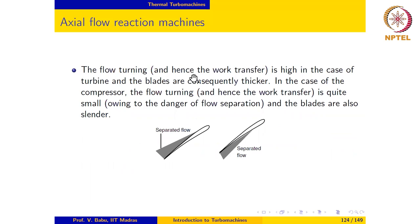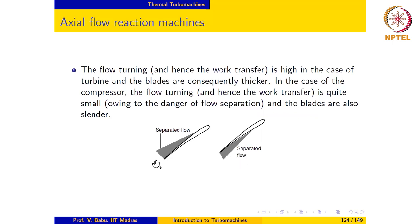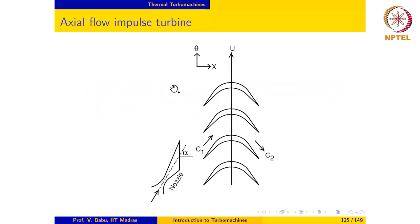Flow turning and work transfer are high in the turbine due to the favorable pressure gradient, so blades are thicker and more curved. In the compressor, flow turning and work transfer are limited by the danger of flow separation, and the blades are consequently slender. When the boundary layer separates from the blade surface, the flow becomes unsteady and compressor performance becomes highly unstable; the resulting unsteady mechanical stresses can be catastrophic and must be avoided.